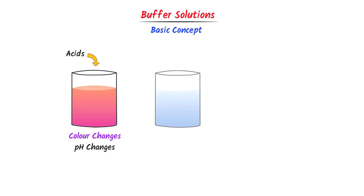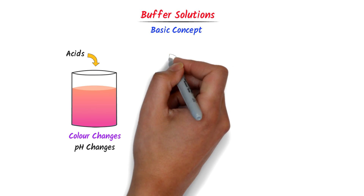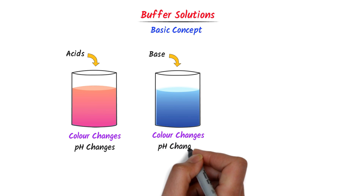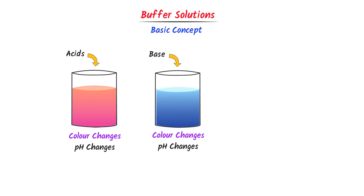Secondly, consider water in this beaker. Now I add few drops of base to this water. We can see that the color of the water changes to blue. So we say that when color changes, its pH changes.